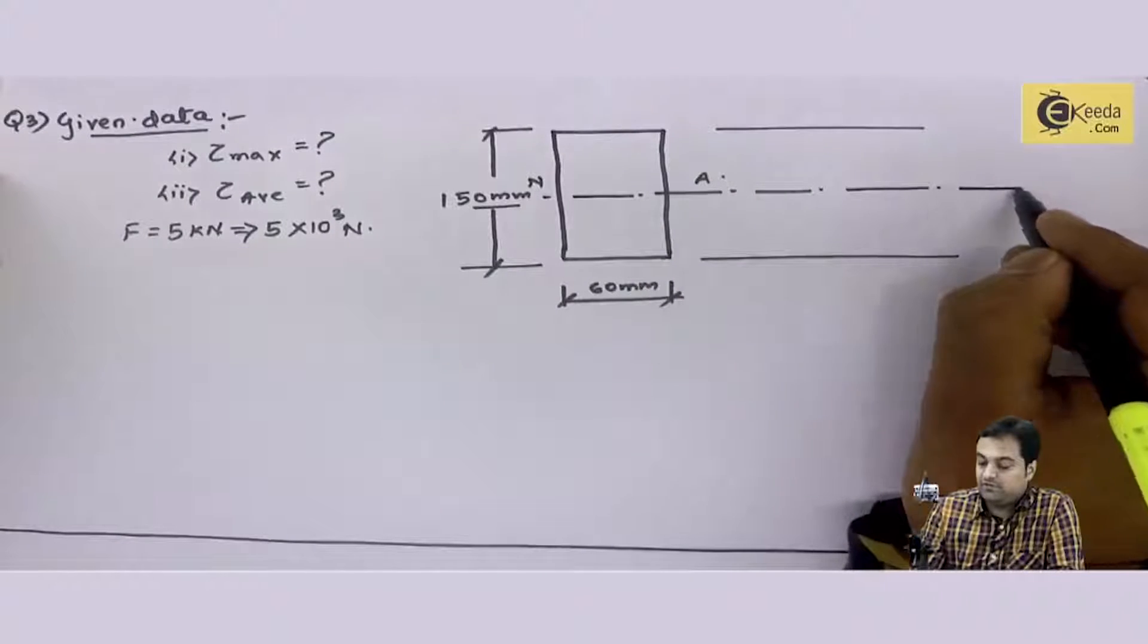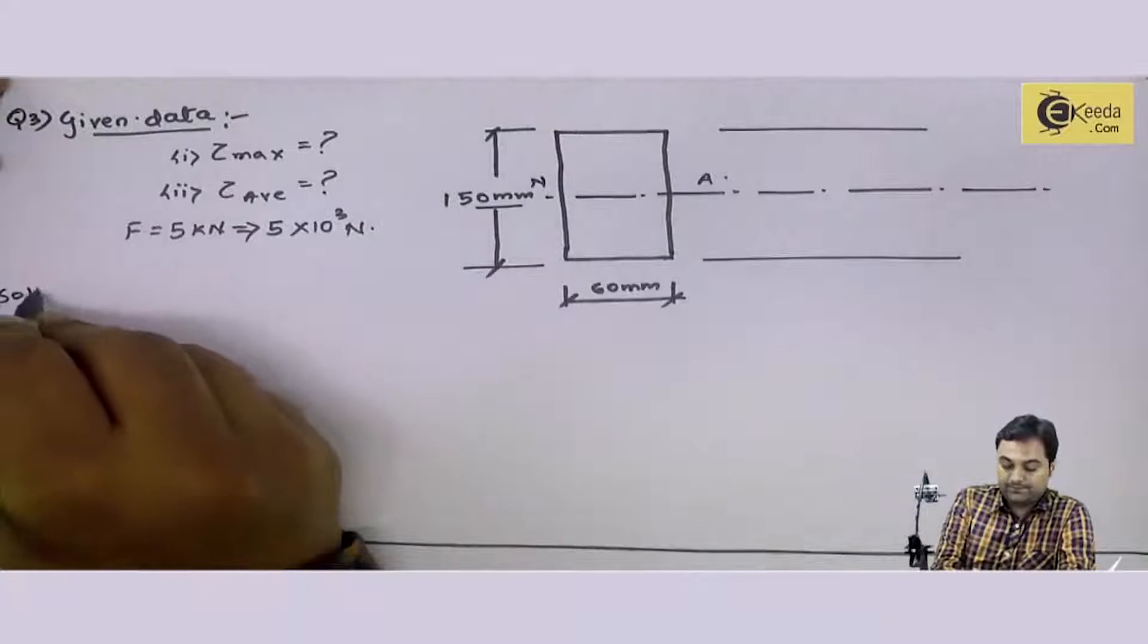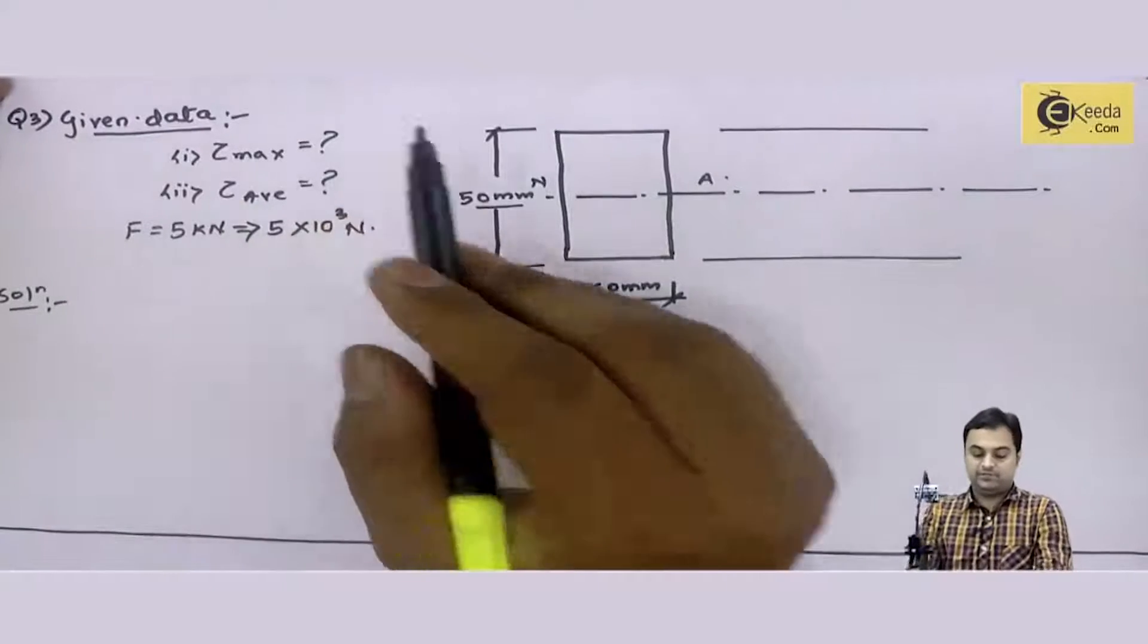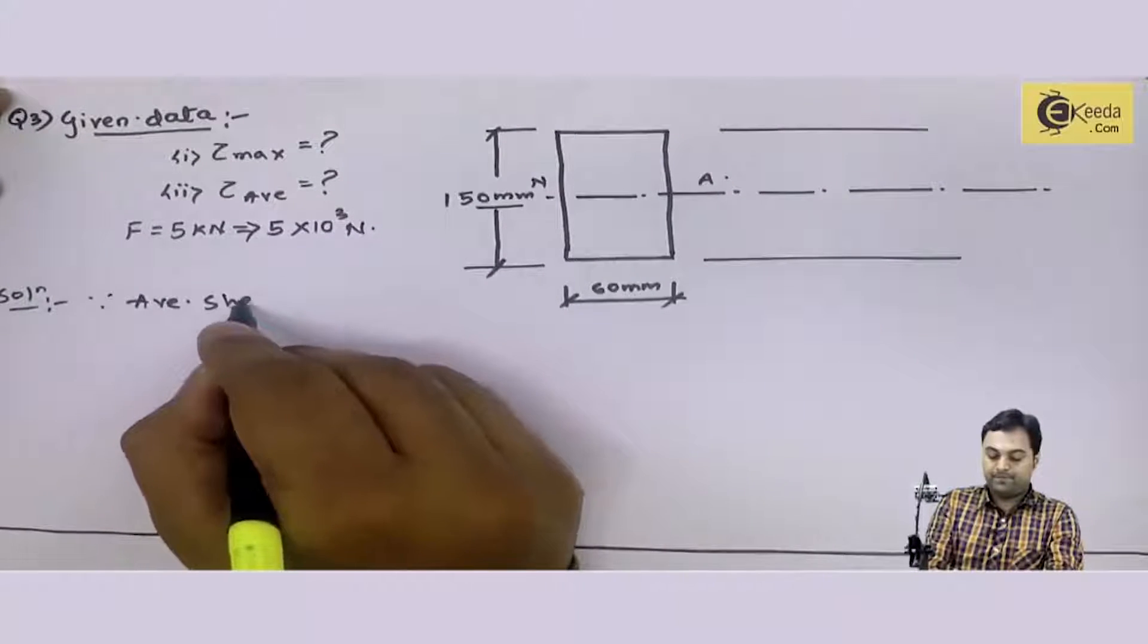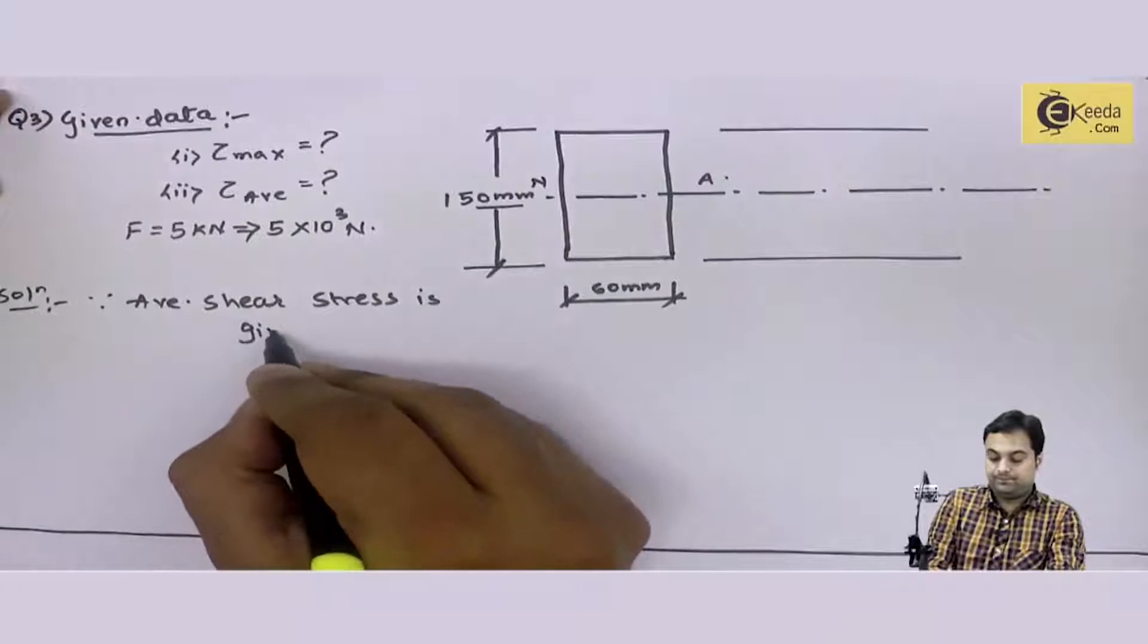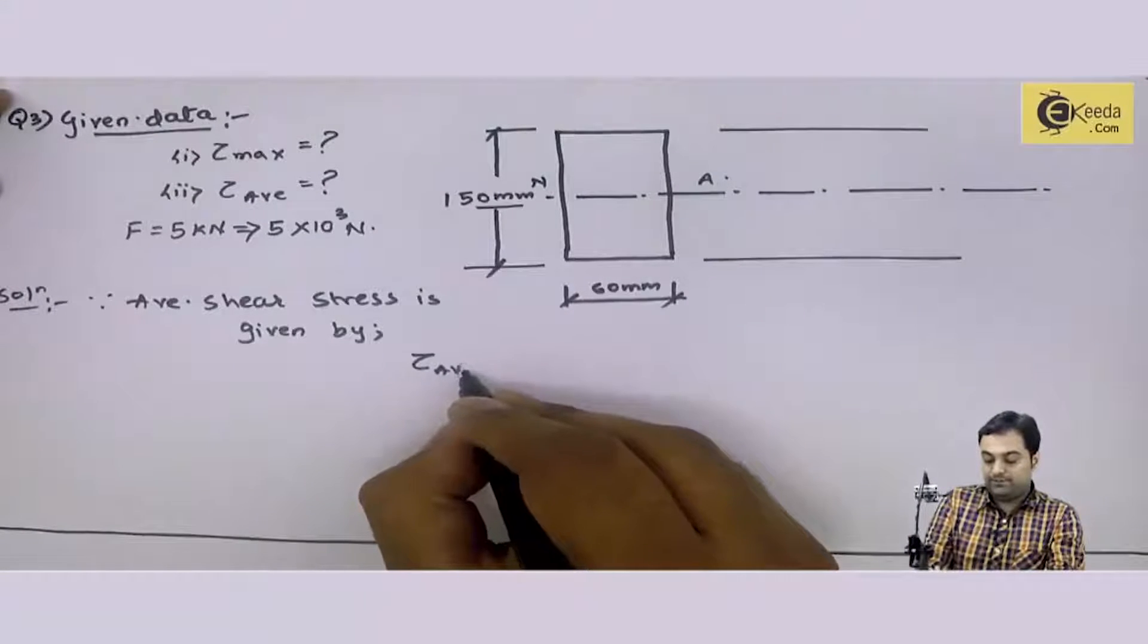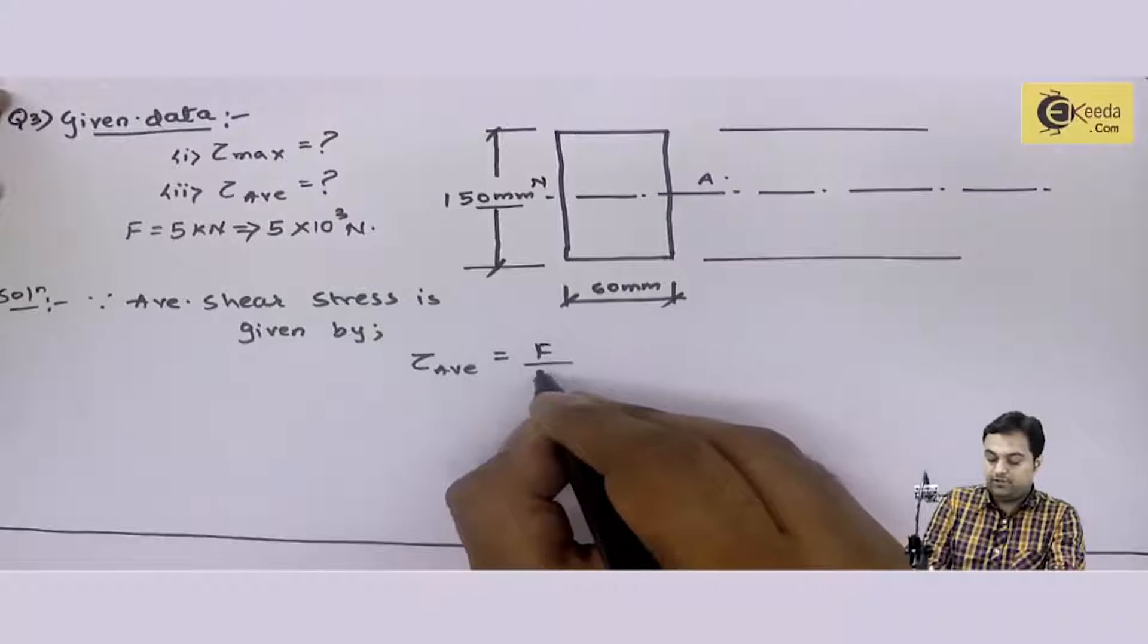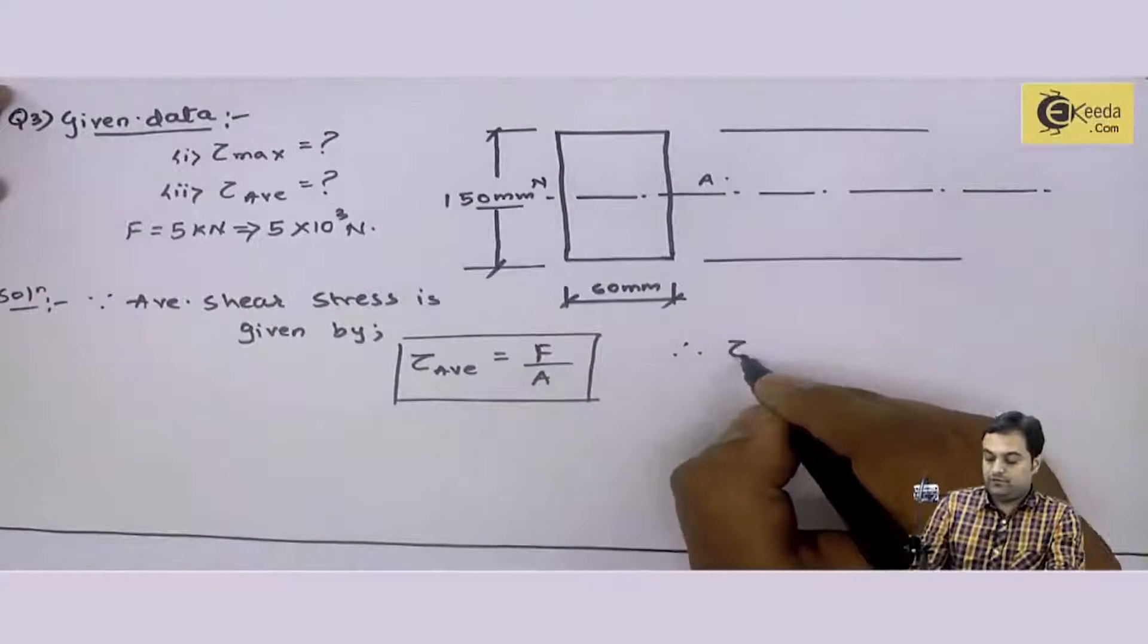Since tau max and tau average have been asked, I can write down. Since average shear stress is given by tau average equals shear force upon area.